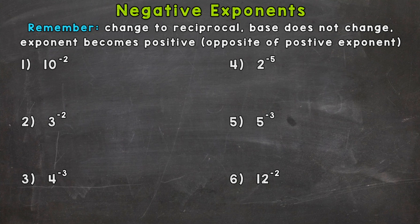Now up top, I have a few things to keep in mind as we go through these: the rules we're going to use. Change to the reciprocal, your base does not change, and your exponent becomes positive. This will have the opposite effect of positive exponents. That might not make sense right now, but as we go through these problems, you'll definitely see what I mean.